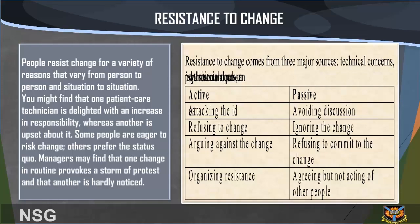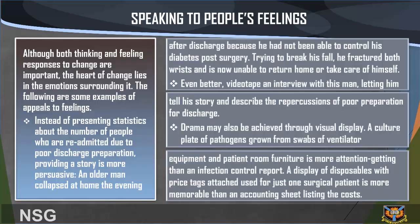Helping teams recognize their preference for certainty as opposed to change will increase their receptivity to necessary changes in the workplace. Speaking to people's feelings: Although both thinking and feeling responses to change are important, the key to change lies in the emotions surrounding it. For example, instead of presenting statistics about the number of people readmitted due to poor discharge preparation, providing a story is more persuasive.